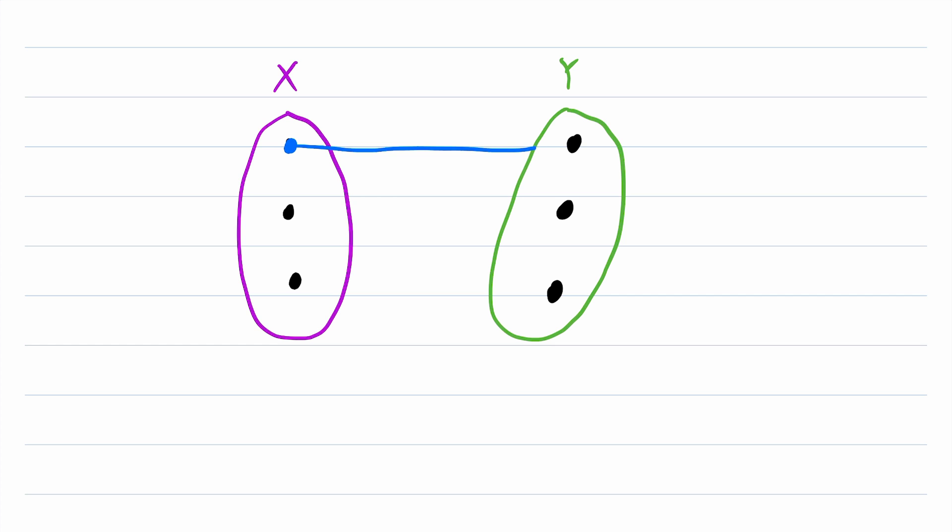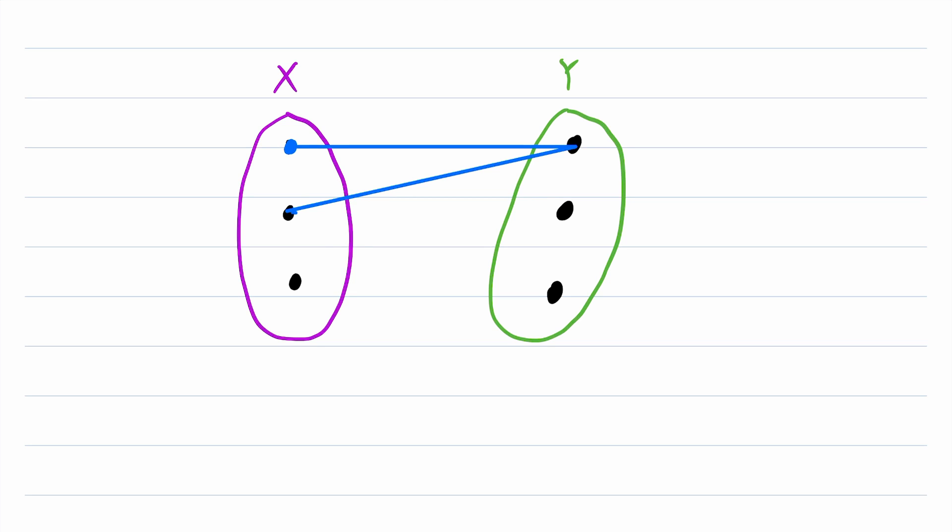Every odd numbered edge will put the cycle in the set Y. For example, here's the first edge. Every even numbered edge, here's the second edge, will bring the cycle back to the set X. Here's the third edge, another odd edge, and it brings the cycle to Y. The fourth edge, another even edge, brings it back to X. Another odd edge, the fifth edge, goes to Y, and then another even edge would go back to X. And again, we know this has to be the case because this is a bipartite graph.